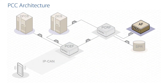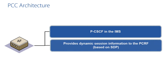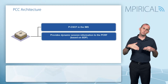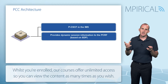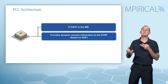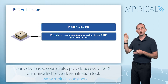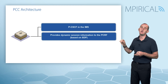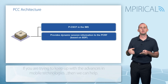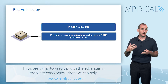Moving across the network, the application function is the next entity to cover. The application function, particularly in the context of the IMS, would be the proxy call session control function. In the case of the IMS, the application function would be dynamically providing session information to the PCRF as subscribers establish their IMS-based services — for example, sending SIP signaling to establish a Voice over LTE call. The proxy call session control function would pull pertinent information from the session description protocol SDP layer and pass that to the PCRF to facilitate establishment of an appropriate bearer in the IP CAN.